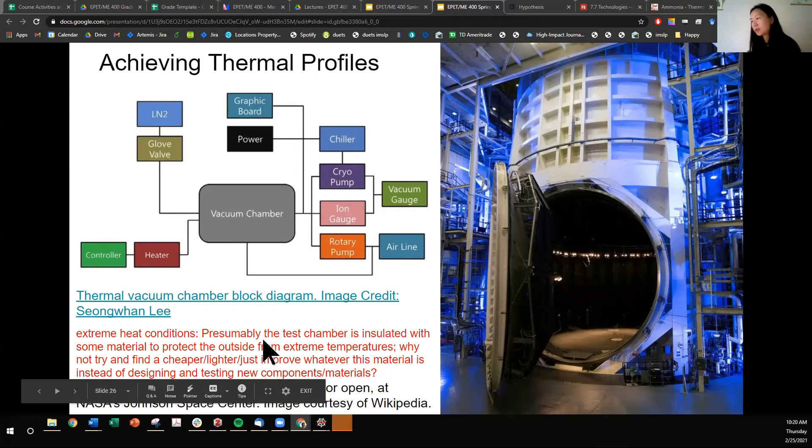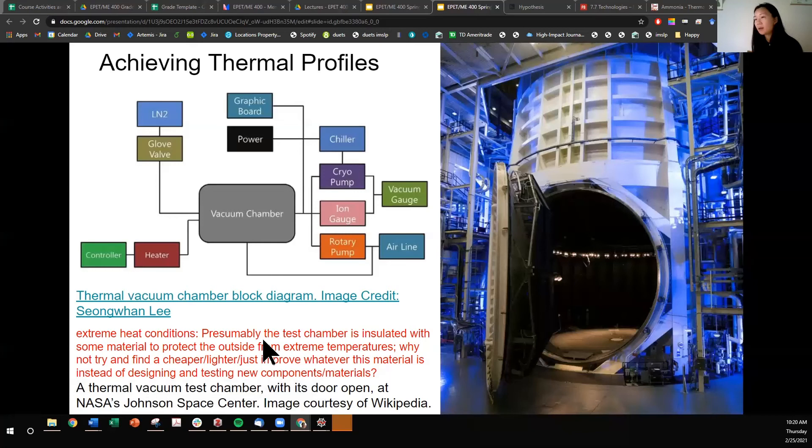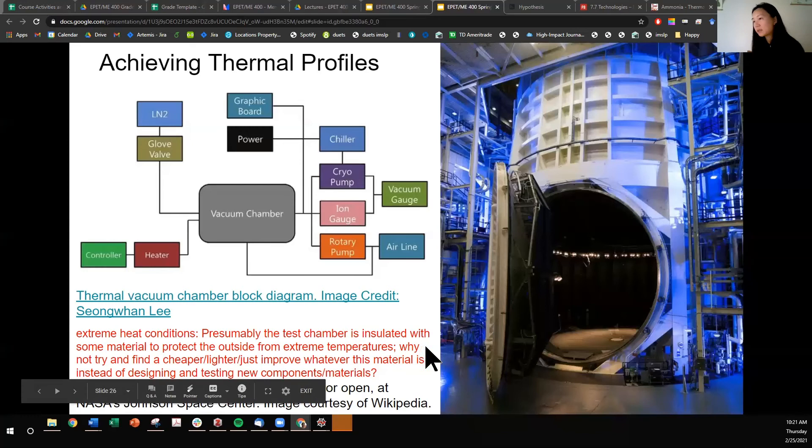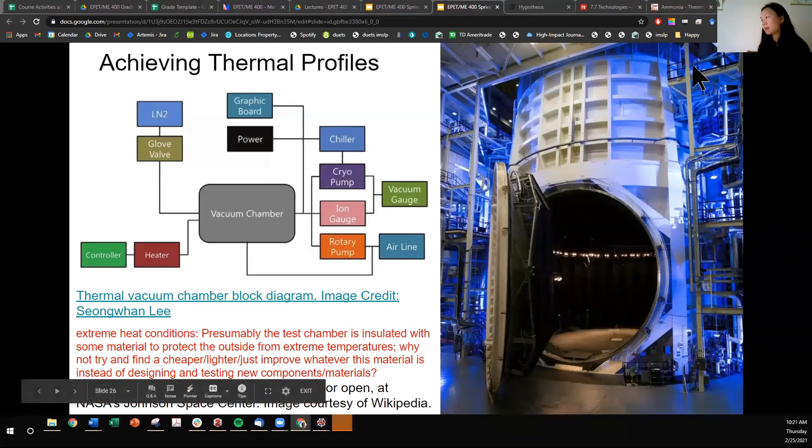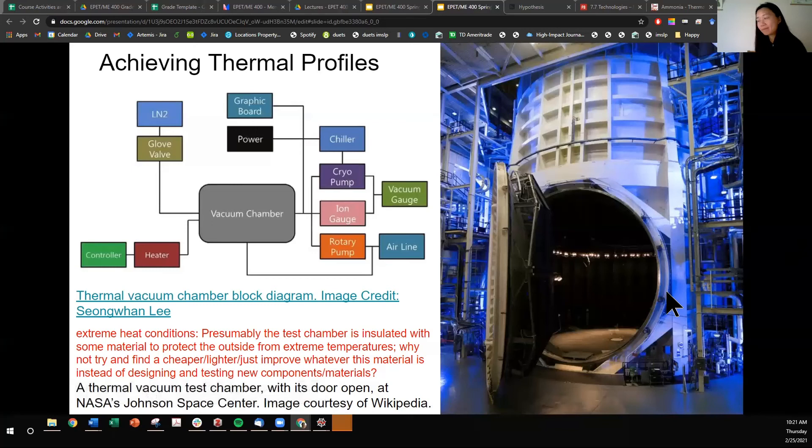Question here. Presumably the test chamber is insulated with some material to protect the outside from extreme temperatures. Why not try to find a cheaper, lighter, or just improve whatever this material is instead of designing and testing new components or materials? I don't think I understand this question very well. So I will answer the part I do understand. The test chamber is insulated with some material. Yes, I guess it is insulated with some material, but do remember that vacuums are insulative. So if the shroud is displaced from the surface of this chamber, then the amount of space separating the shroud from the actual thermal vacuum chamber is going to be quite insulated. So you don't need to worry about the outside getting too cold. If whoever typed that question can put it in the chat in a more descriptive way to help me understand it, maybe I can answer it in this lecture. Otherwise I'm going to move on.